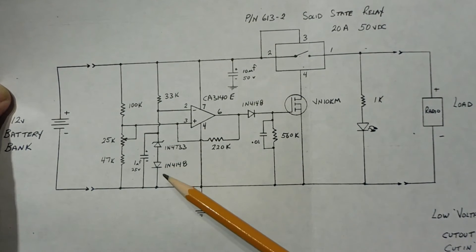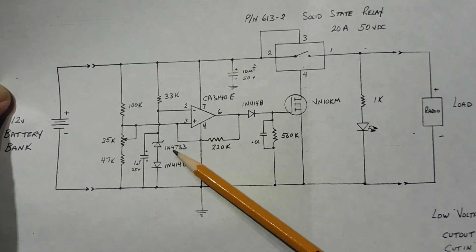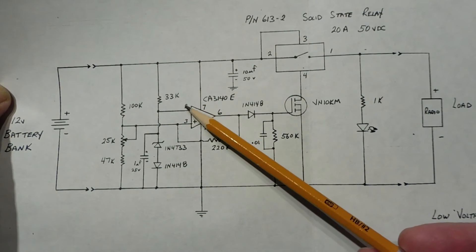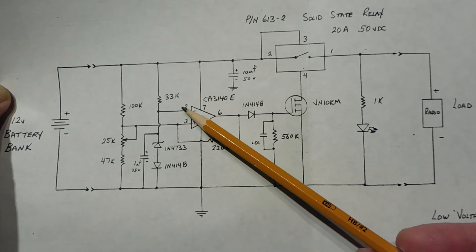So we start off with the voltage reference. I'm using a 1N4733 zener diode, it's a 5-volt zener diode in series with a switching diode to give it temperature compensation. So we have a voltage of pin 2 around 5 volts, which is temperature compensated.